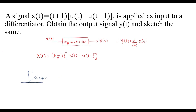Now I will draw t plus 1. It is the same ramp signal shifted to t equal to minus 1. So, at t equal to minus 1 the signal starts, and this ramp will continue till infinity. This signal is then multiplied with u of t minus u of t minus 1.